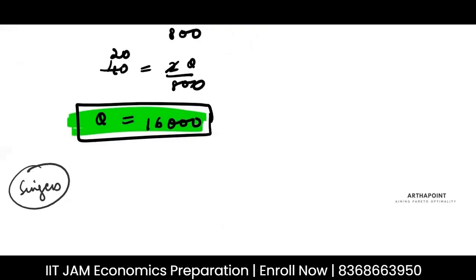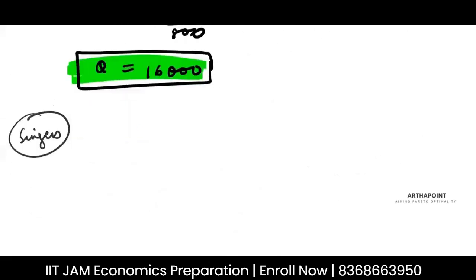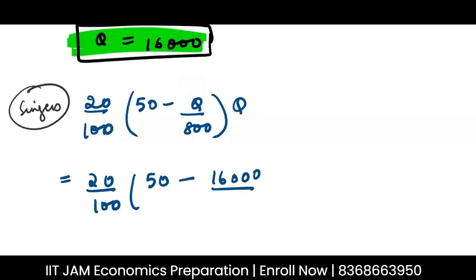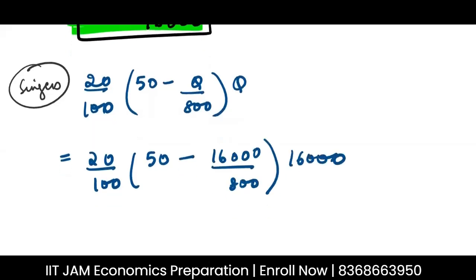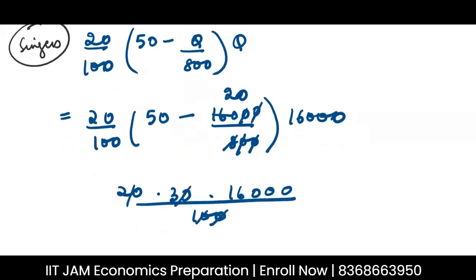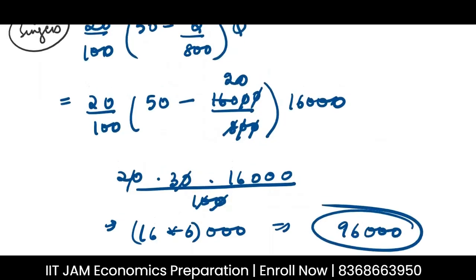So what is the singer's share? It was 20% of the revenue. Revenue is (50 − Q/800) × Q. Substituting Q = 16,000: (20/100) × (50 − 16,000/800) × 16,000 = (20/100) × 30 × 16,000 = 16 × 6,000 = 96,000. So the singer earns ₹96,000.